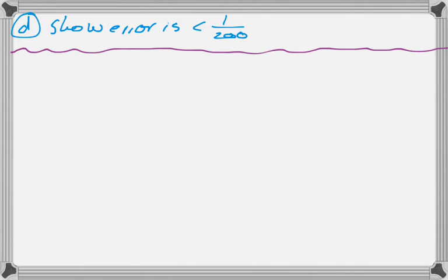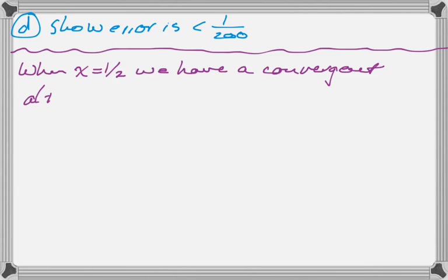And the next question, it turns out, is about error. So I have to show that the error is less than 1 over 200. So the first thing I'm going to do is I'm going to make sure that whoever's scoring this knows that I know that when x is 1 half, we have an alternating series that converges. Converges by the alternating series test, if you want to get into that.